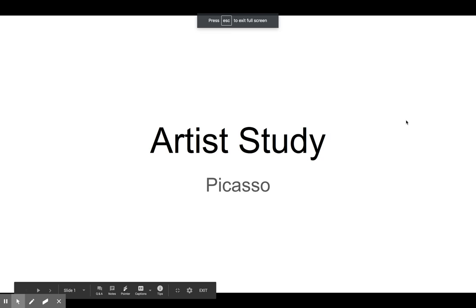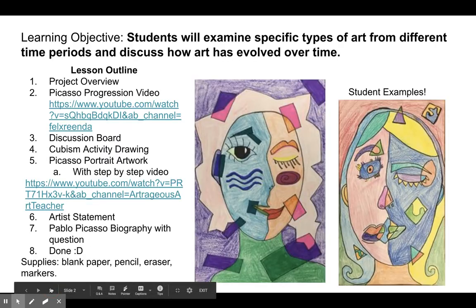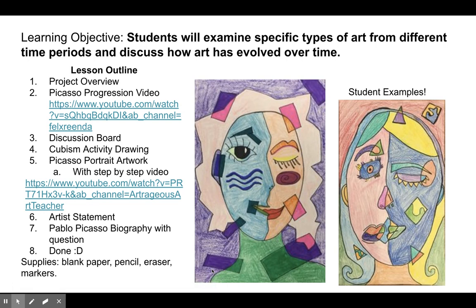Hello art students! For your next project we're going to focus on a specific famous artist and use their artwork to inspire our own. The artist we're going to study is Pablo Picasso. You may have heard his name before, and our learning objective is that we're going to examine specific types of art from different time periods and discuss how art has evolved over time.